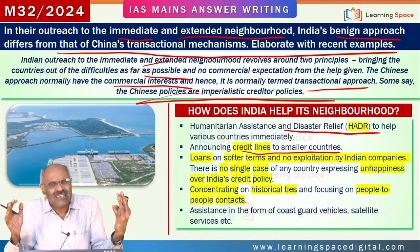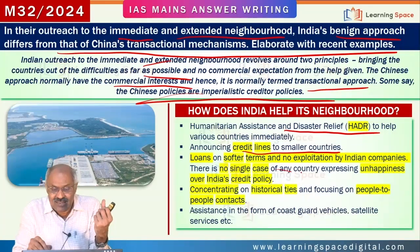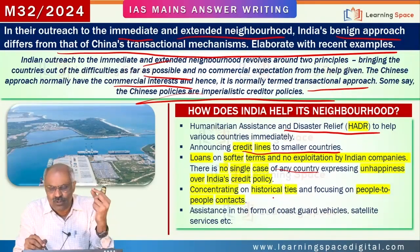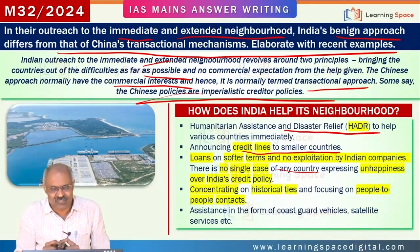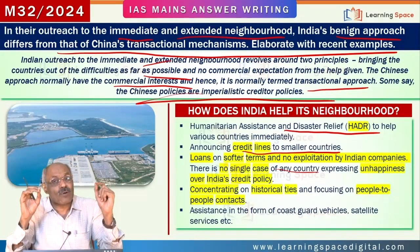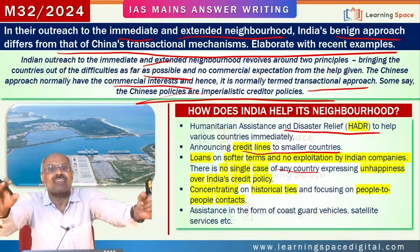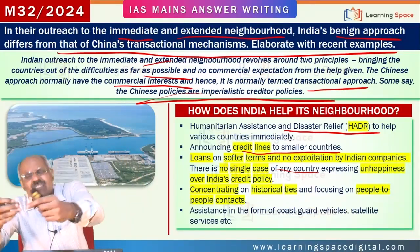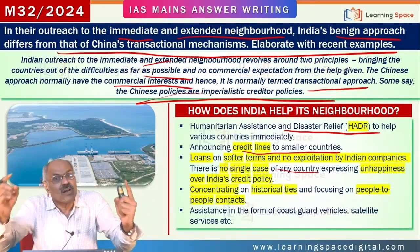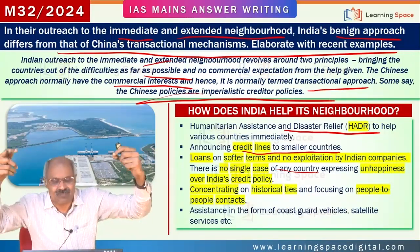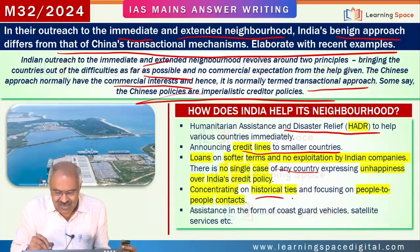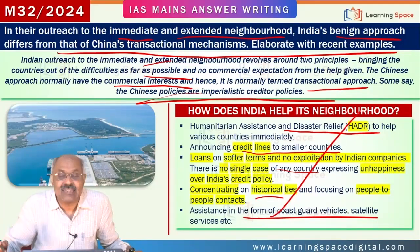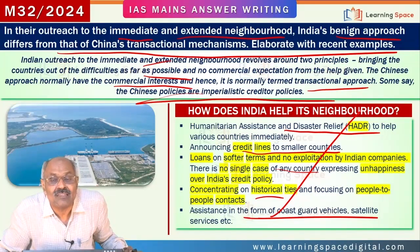India offers credit lines without many conditions and on softer terms. If India is undertaking projects in any country, there is no exploitation by Indian companies. India's project assistance is on softer terms — some grants, some loans with softer interest rates. No country has complained that Indian companies are exploiting. India concentrates on historical ties, people-to-people contacts, and assistance in the form of patrol vehicles, satellite services, and more. This is how India helps in a benign way.